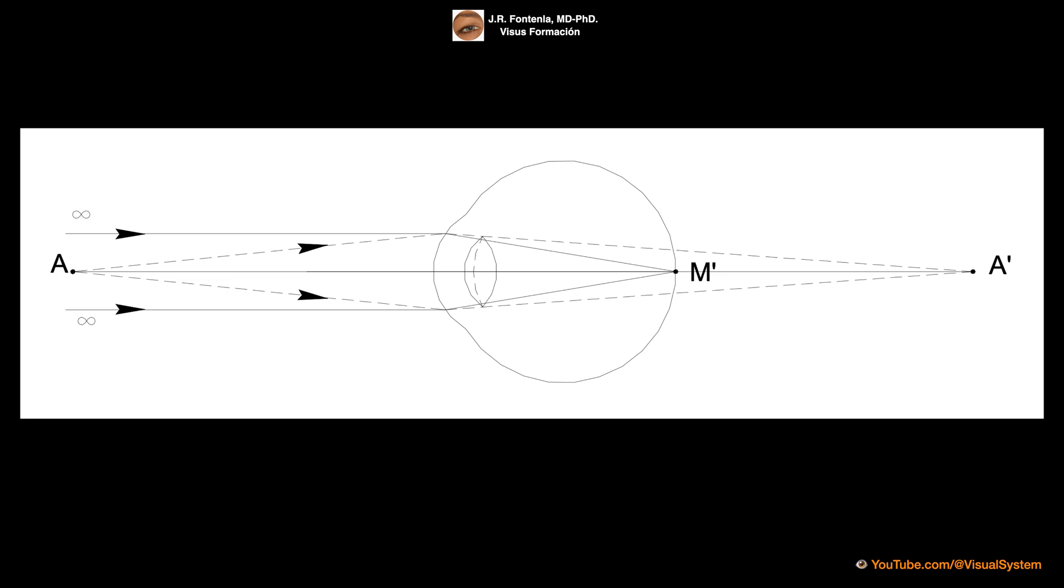The mechanism by which the converging power of the eye is increased to see clearly A, by moving A' to M', is called accommodation.